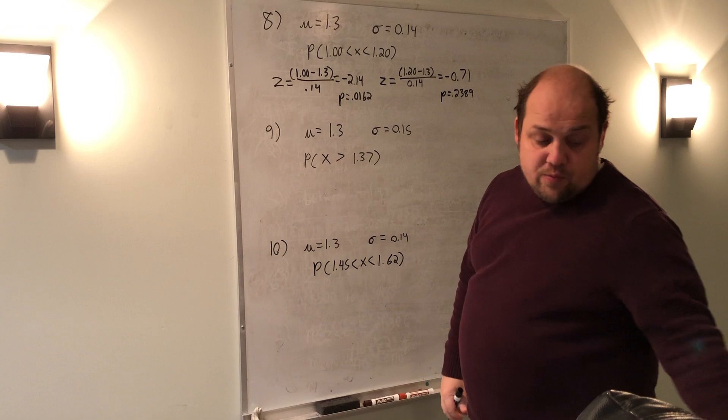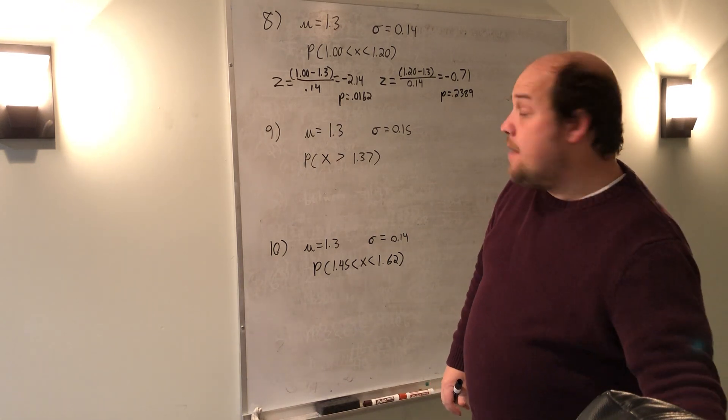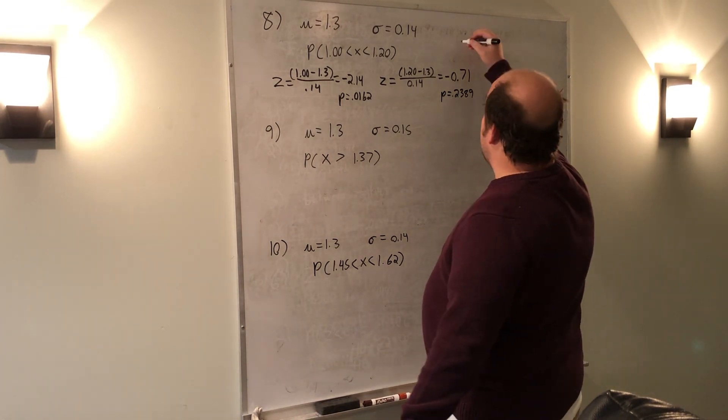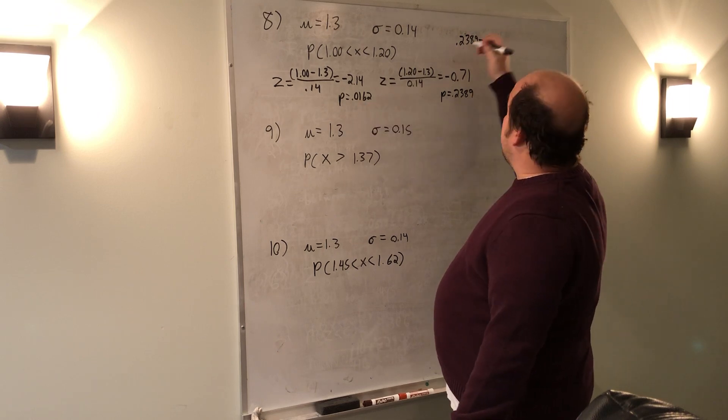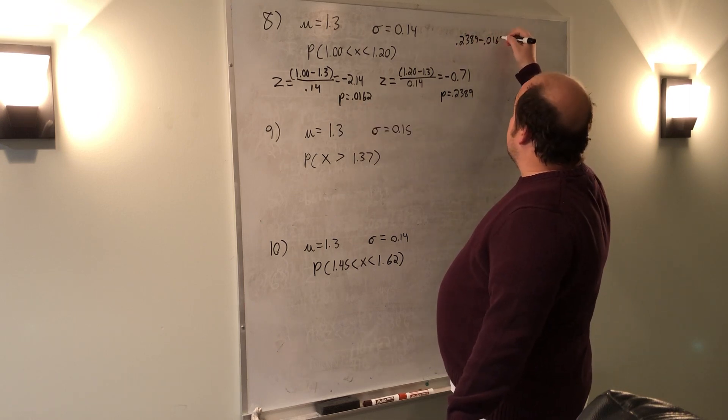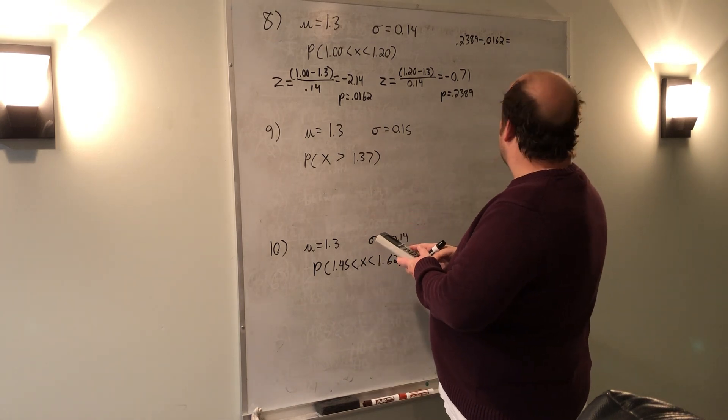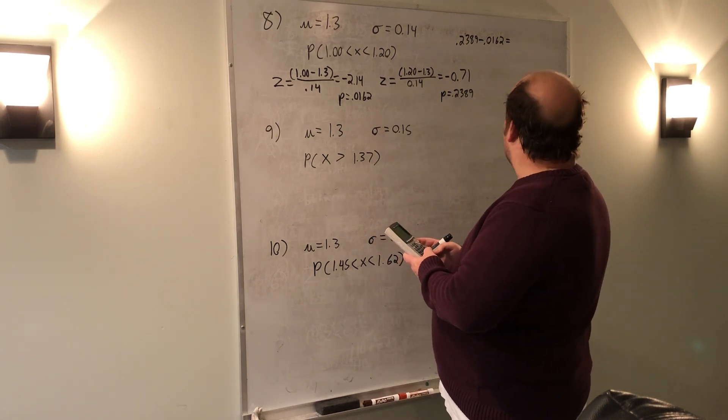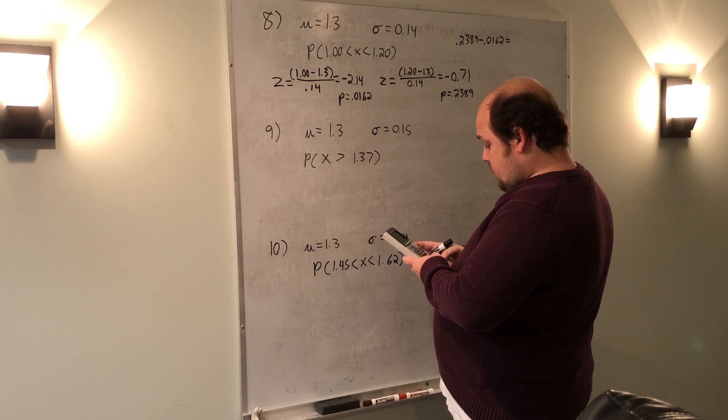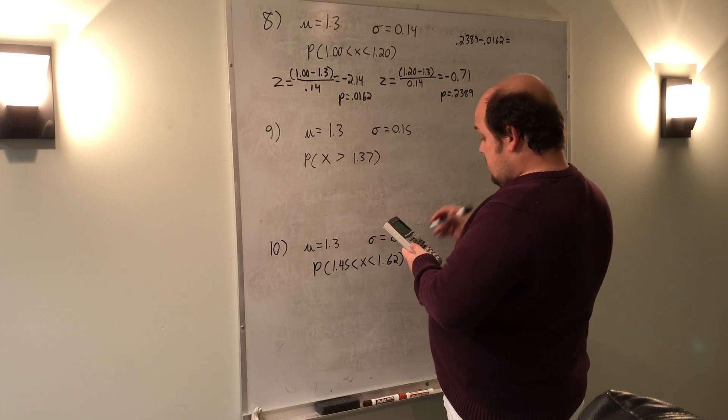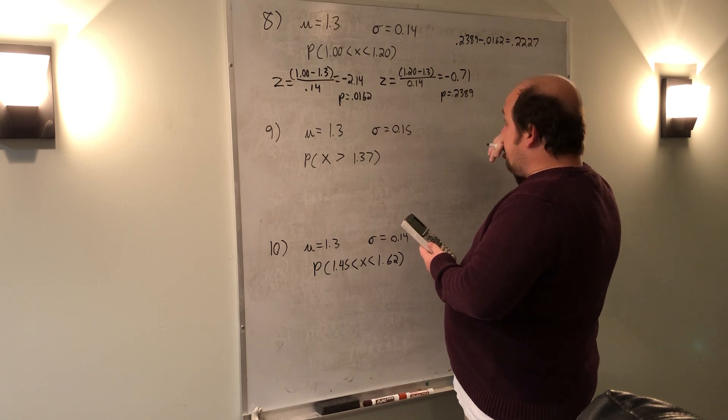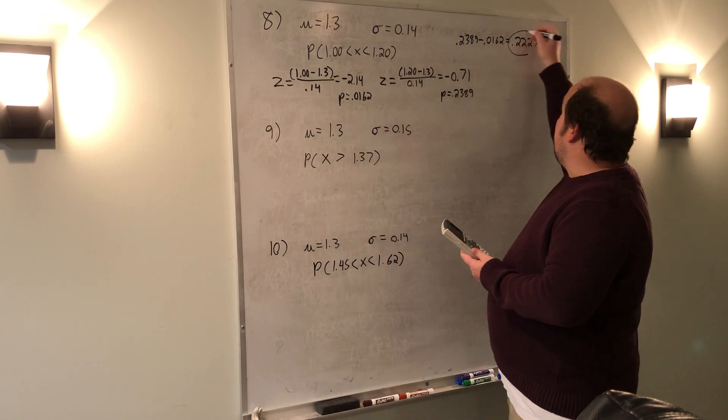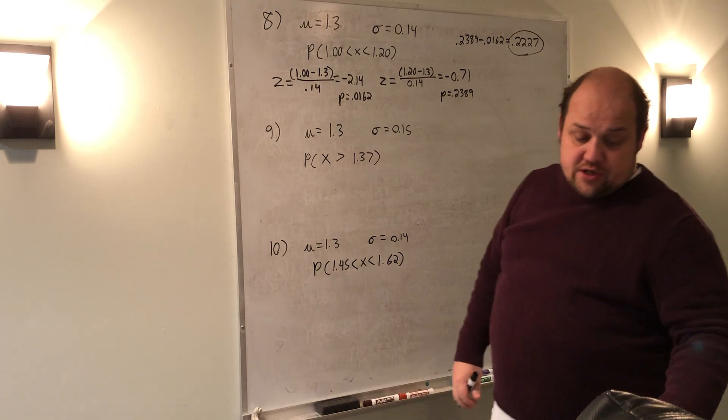Whenever I'm doing a between question, the final step is I need to take the larger p-value, 0.2389, subtract the smaller p-value, 0.0162. When I do that in my calculator, 0.2389 minus 0.0162, gives me an answer of 0.2227. This is the correct final answer to that first question, number 8.